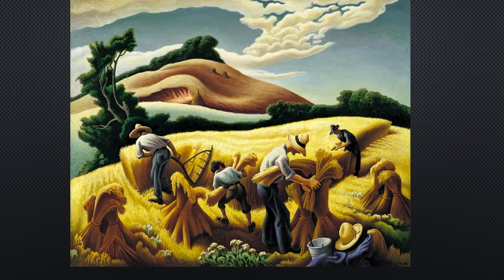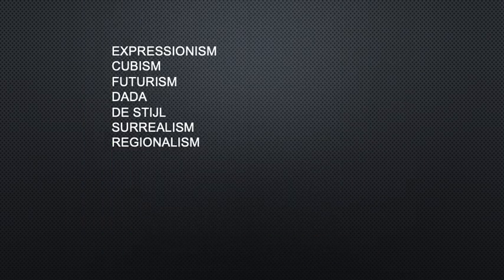Here's another Thomas Hart Benton I really like. He uses a lot of undulating forms and shapes, making the landscape almost look like it's breathing and alive. Just look at the clouds in the air. This is obviously some wheat harvesters. I love Thomas Hart Benton — very cool.